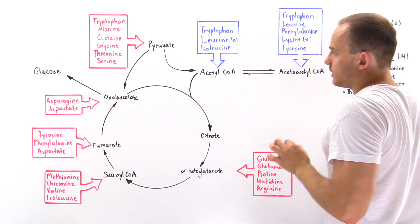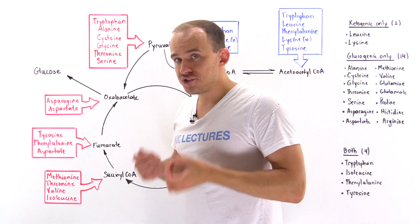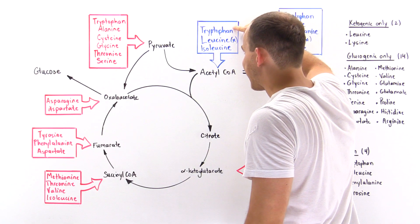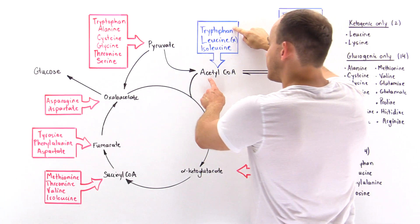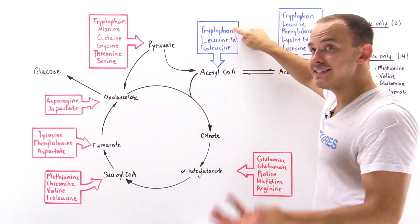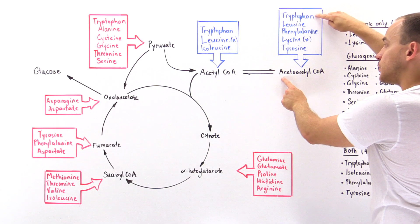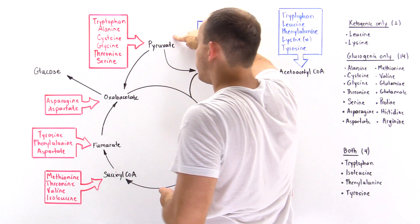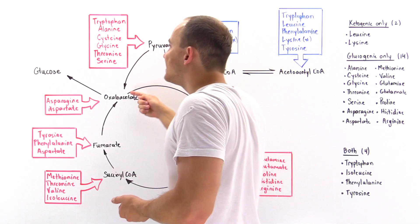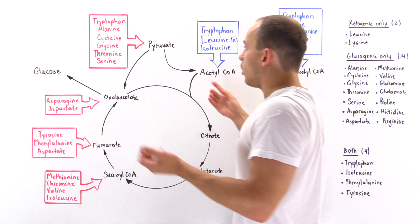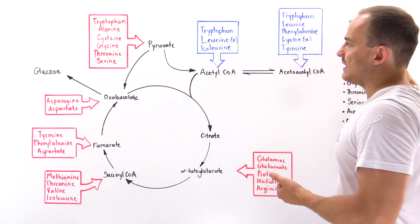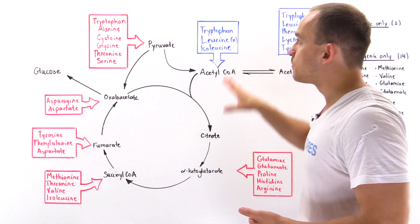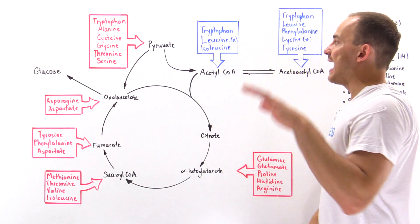The only amino acids that are strictly ketogenic are leucine and lysine. Tryptophan, if it follows one pathway, can form acetyl coenzyme A — ketogenic. In a different pathway, it can form acetoacetyl coenzyme A — again ketogenic. But in another pathway, it helps us form pyruvate, which leads to glucose production — making it glucogenic. So tryptophan is both glucogenic and ketogenic. Leucine and lysine are the only ones that are solely ketogenic.